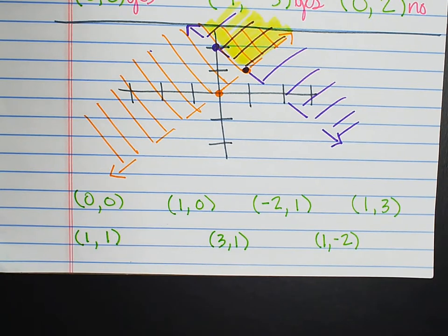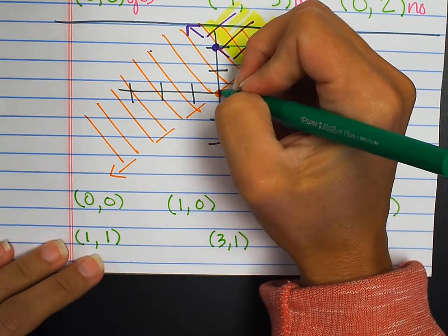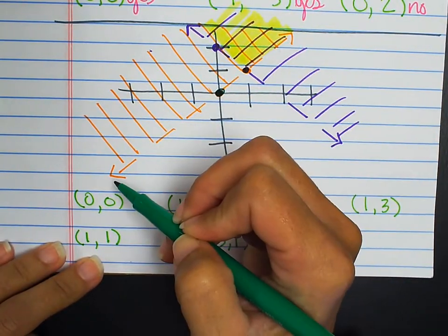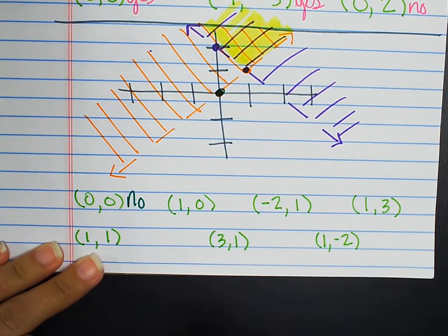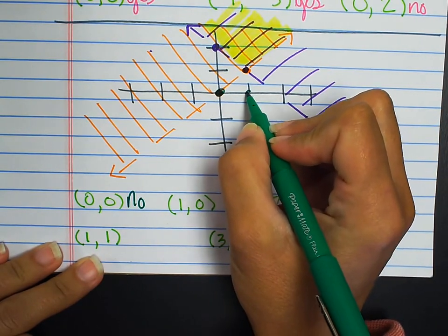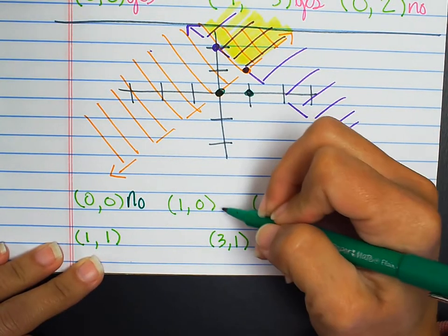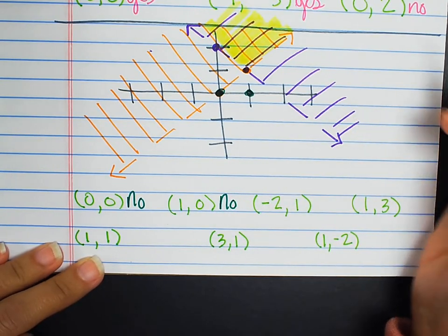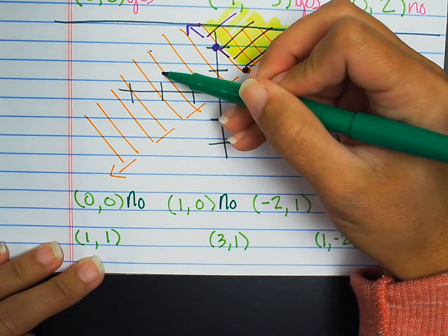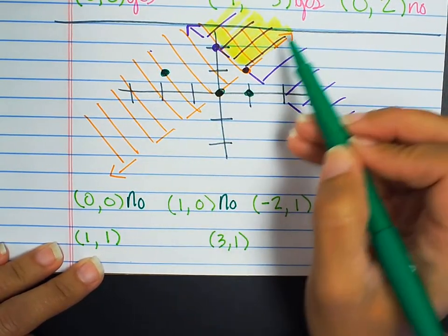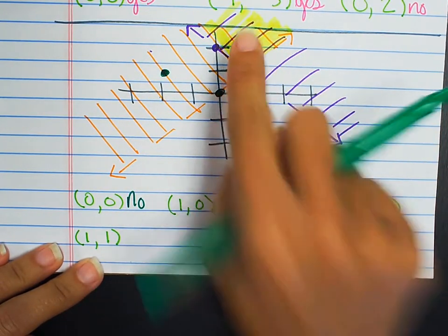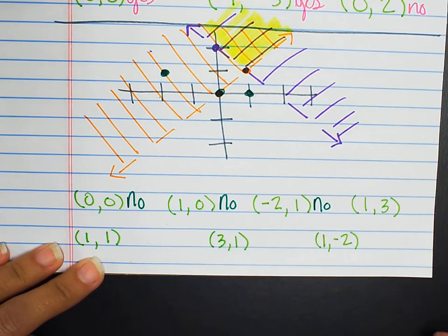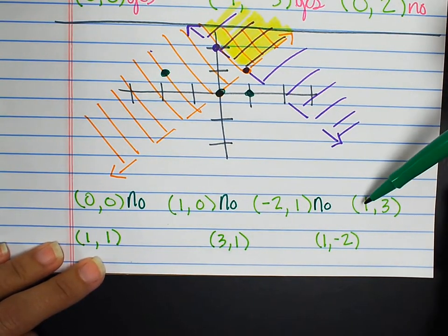Is the point zero, zero part of the solution? Zero, zero is my origin. It does fall on this dashed line, but it does not fall in the double shaded region. It is not a solution. Let's look at the point one, zero. That's the point here — clearly not in the shaded region. The point negative two, one — this point is a solution to the orange line, but it is not a solution to the system because it does not fall in the double shaded region.